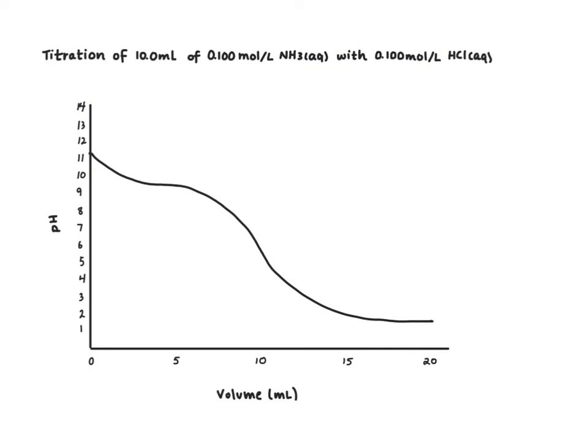We are going to look at the titration of a weak base, in this case ammonia, with a strong acid, in this case hydrochloric acid. Our weak base ammonia is not going to ionize or dissociate in water, and so in solution we are going to have NH3.